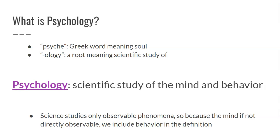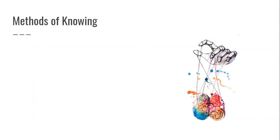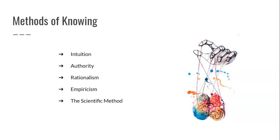You'll be hearing the word 'observe' quite a bit throughout this course, because observation really is one of the key components of research. This chapter started by talking about different methods of knowing. There were five specific methods mentioned: intuition, authority, rationalism, empiricism, and the scientific method.